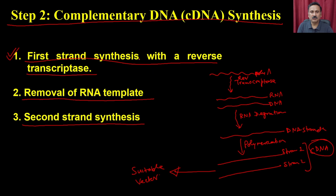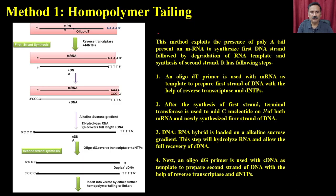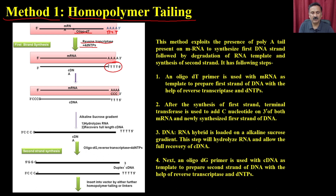There are multiple approaches for cDNA synthesis. Method 1 is the homopolymer tailing method. You have the messenger RNA, and you add oligo-dT primers that sit next to the poly-A tail. Using reverse transcriptase and all four dNTPs, the oligo-dT works as a primer to direct synthesis of the first strand cDNA.